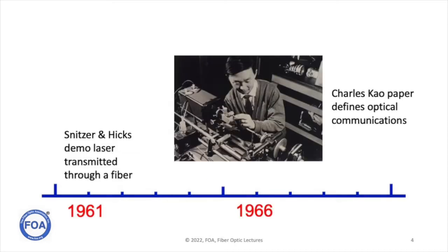In the early 1960s, Will Hicks and Elias Schnitzer at American Optical demonstrated transmitting laser light through an optical fiber — with lots of implications for fiber optic communications. But the big event of the 1960s was when Charles Cowell at Standard Telephone and Cables in the UK wrote a paper defining how optical communications could work. He really defined how we use fiber optics for communications today, and in 2009 he was awarded a Nobel Prize for his work — well-deserved.